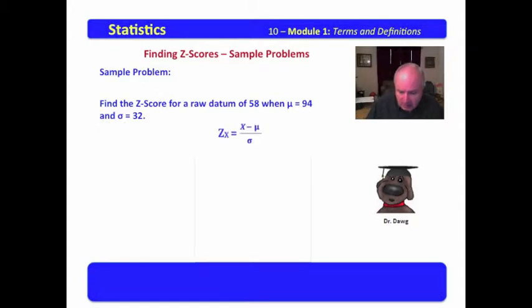This would be our formula. And then we would plug into the formula the values that we know from the problem. We know that X is 58, mu is 94, and sigma is 32. We would plug that in, then we would solve the numerator first. 58 minus 94 is negative 36. Now we would divide, and lo and behold, we have a Z-score equals negative 1.125.